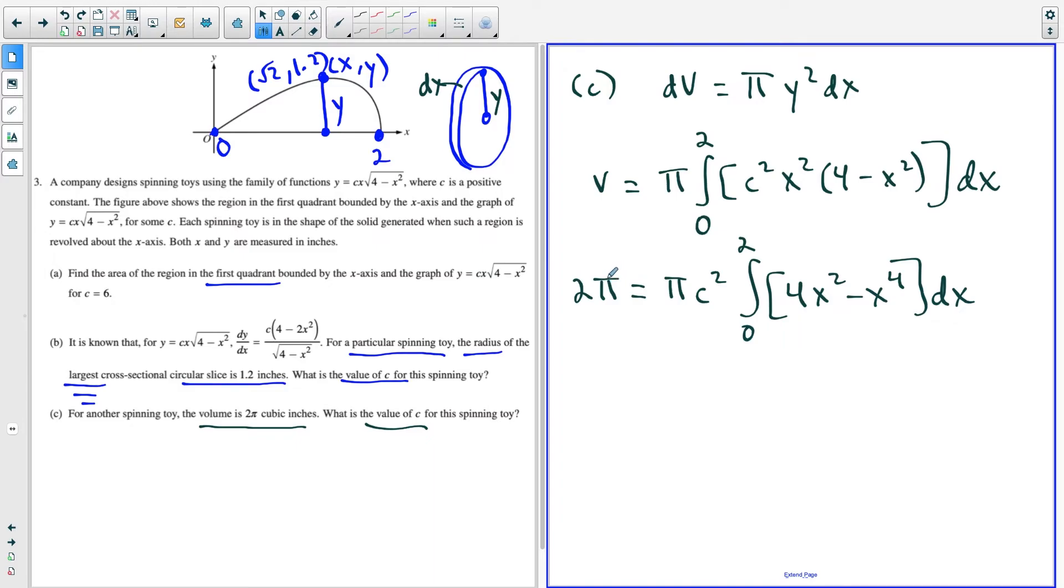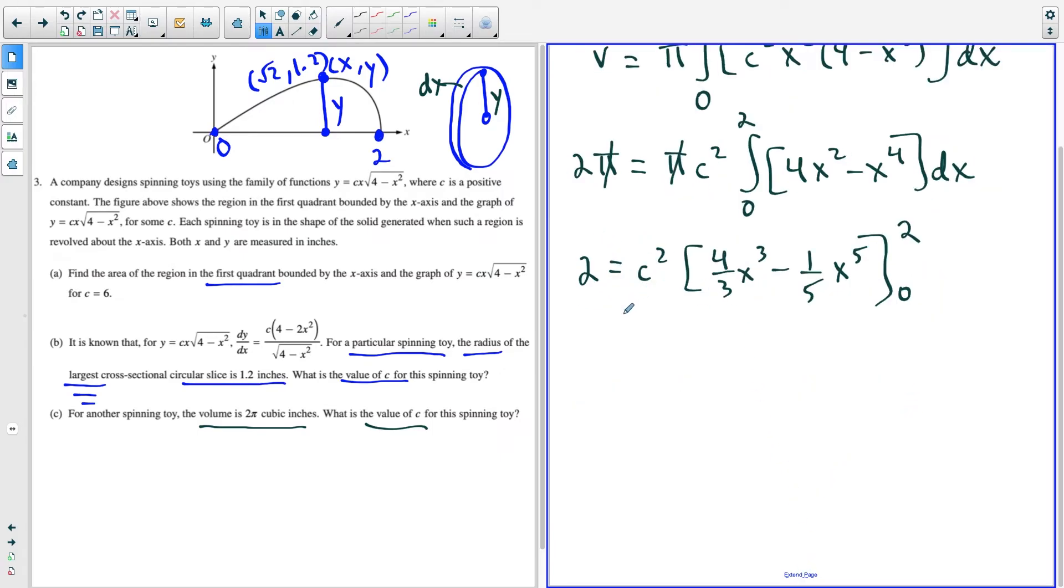So now we just have to be very careful setting this up. Notice I could just cross off the pi's here because they have their matching terms. And I have two is equal to c squared times, and we have the anti-derivative of x squared is going to turn this into four thirds x to the third, minus the anti-derivative of x to the fourth is going to give us one fifth x to the fifth. And we're evaluating this from zero to two.